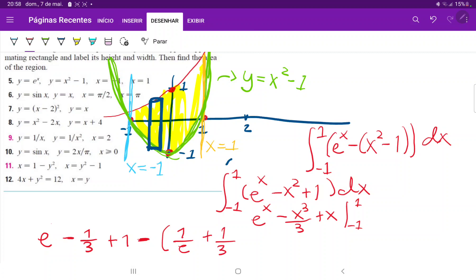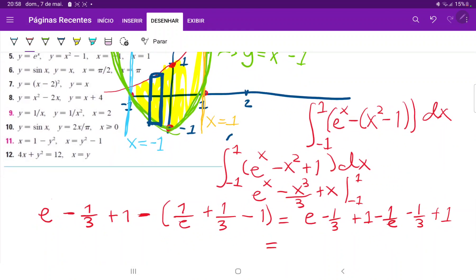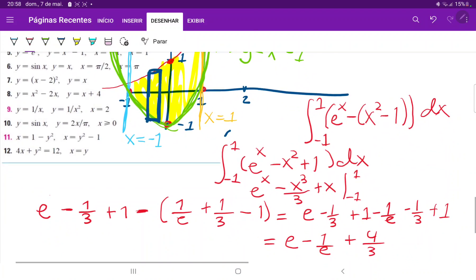Cleaning this up: e minus one third plus one minus one over e minus one third plus one. When we simplify, this is e minus one over e, and the constants give us plus two minus two thirds, which is plus four thirds. So the area enclosed between the curves is e minus one over e plus four thirds.